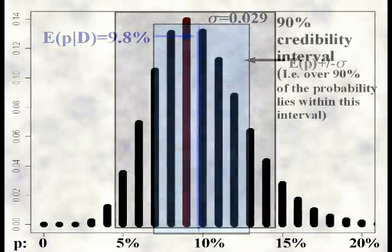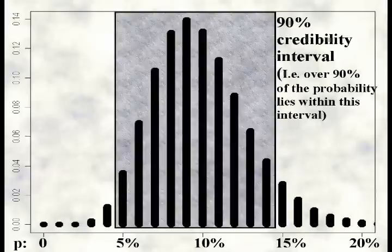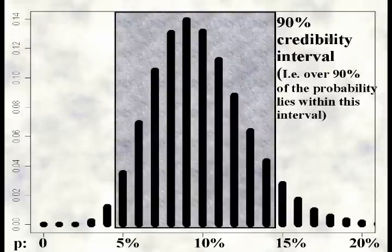Or, we can look at where at least 90% of the posterior probability is. Such an inference on the possible parameter values is called a credibility interval. With a little inspection of the distribution, I found that p ranging from 0.05 to 0.14 is where such a bulk of the posterior probability is found.